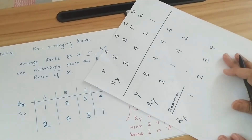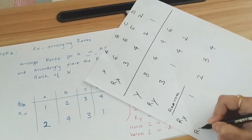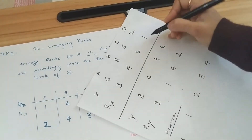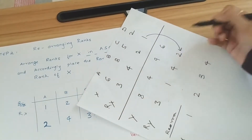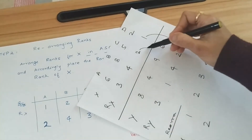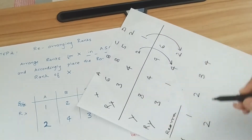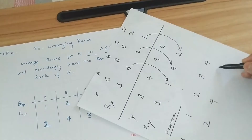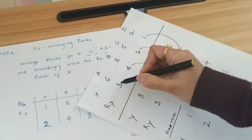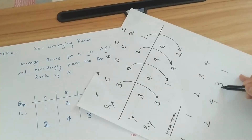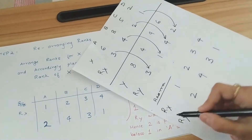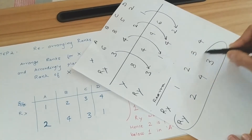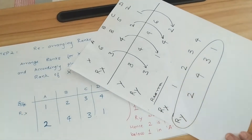We place Rx in ascending order. For Ry, we arrange its elements according to that order. When Rx was 1, Ry was 2; when Rx was 2, Ry was 4; when Rx was 4, Ry was 1; and when Rx was 3, Ry was 3. In Kendall's Tau we only need this Ry row.